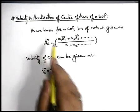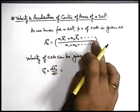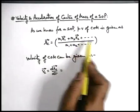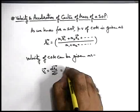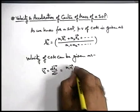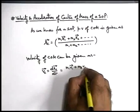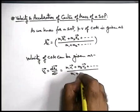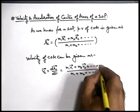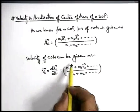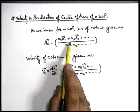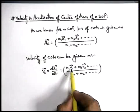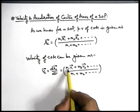So in this situation, if we differentiate it — we know all masses are constant, so only r1 and r2 are changing — this will give us m1v1 vector plus m2v2 vector plus and so on, upon the sum of masses m1 plus m2 plus and so on.